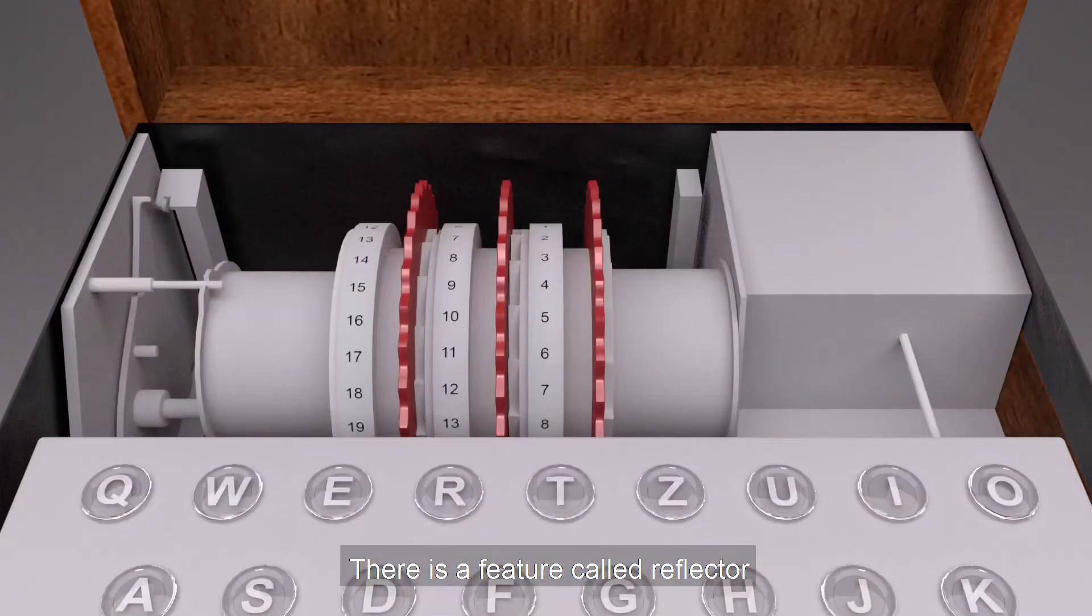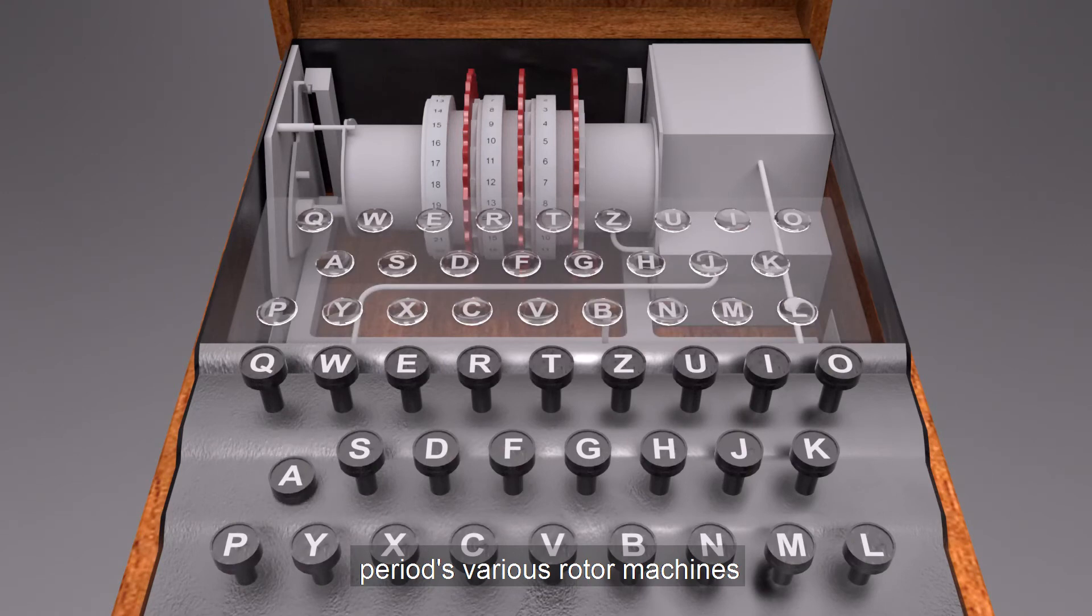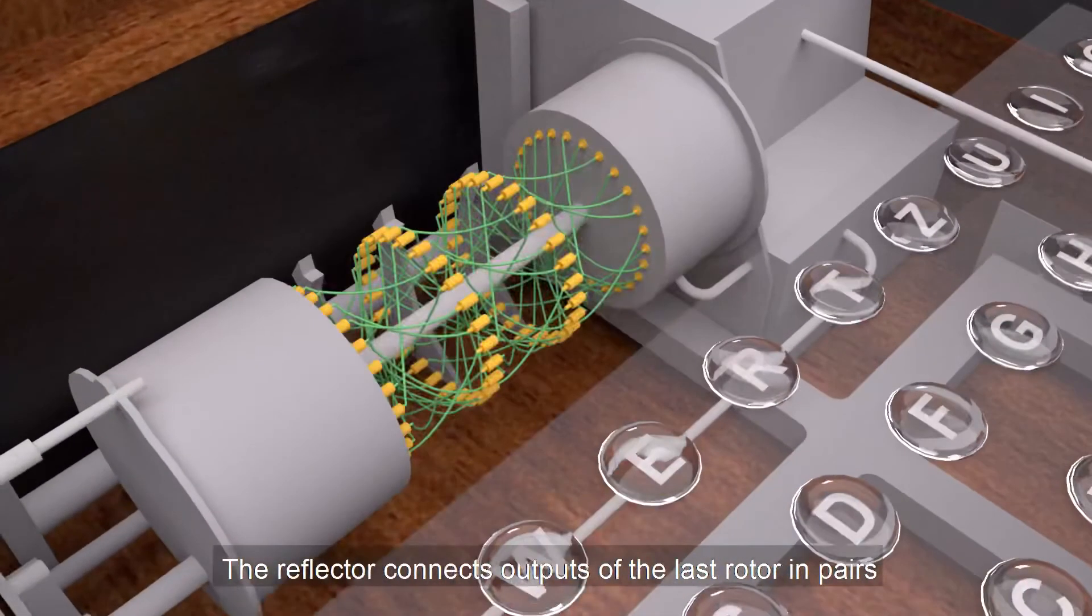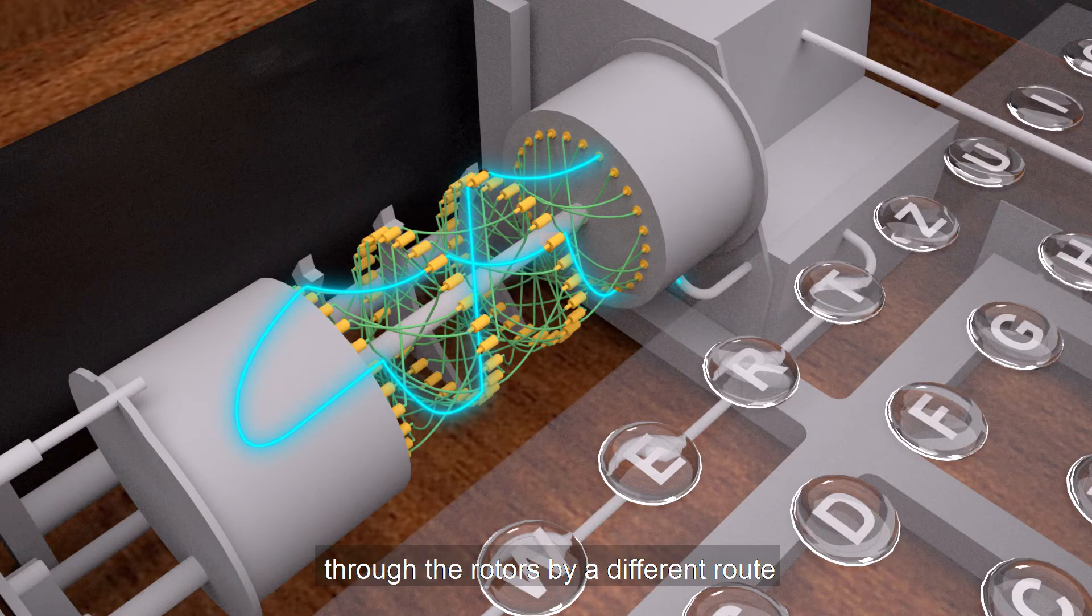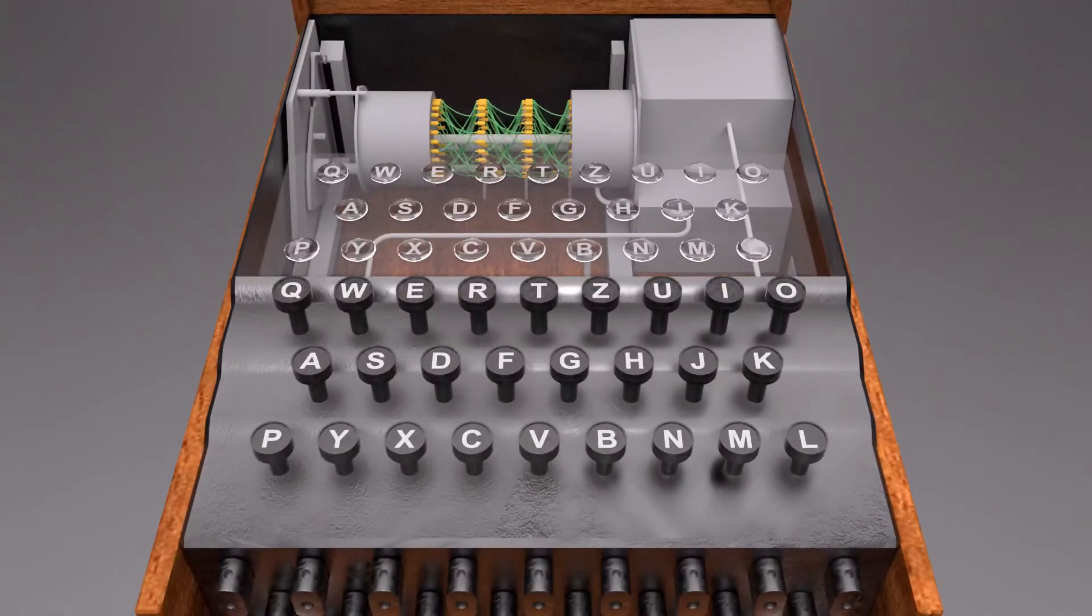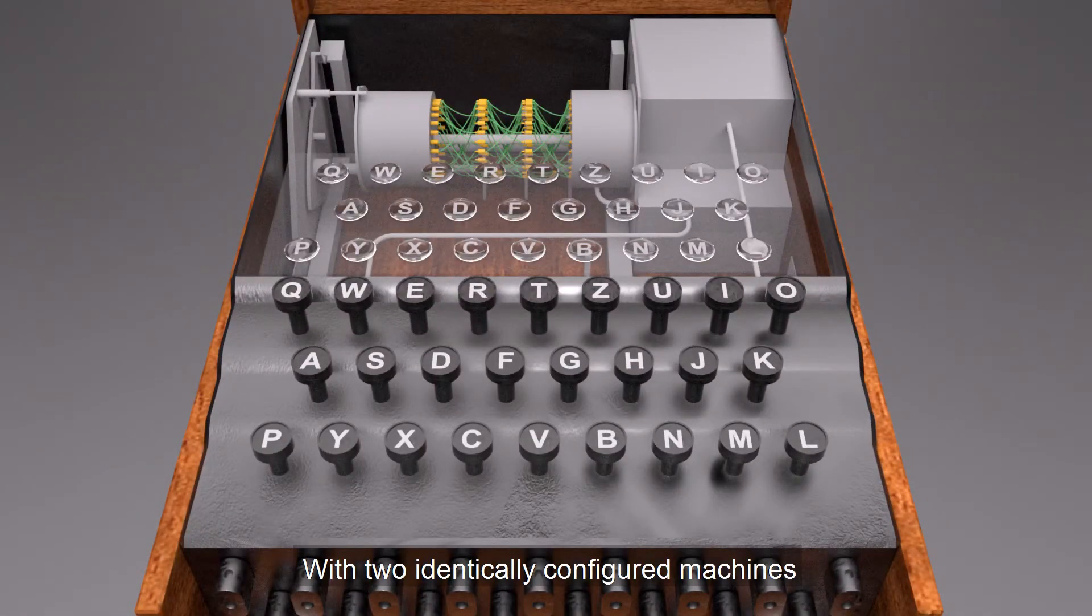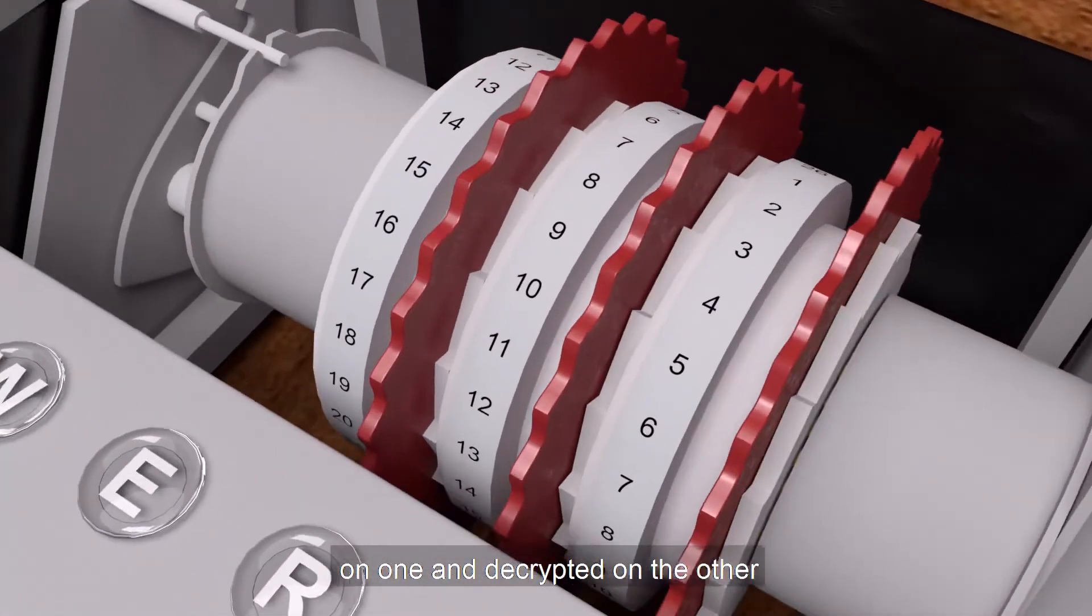There is a feature called reflector, which is unique to Enigma among the period's various rotor machines. The reflector connects outputs of the last rotor in pairs, redirecting current back through the rotors by a different route. The reflector ensures that Enigma would be self-reciprocal. With two identically configured machines, a message could be encrypted on one and decrypted on the other.